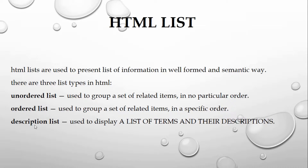There are three types of lists in HTML. The first one is unordered list, used to group a set of related items in no particular order. The second is ordered list, used to group a set of related items in a specific order. And the third is description list, used to display a list of terms and their descriptions.